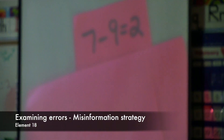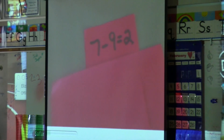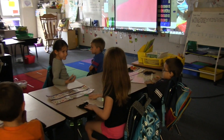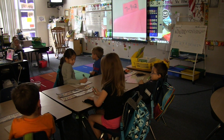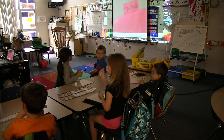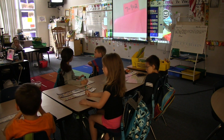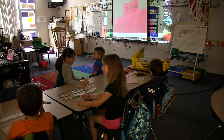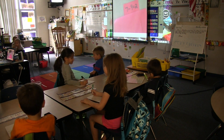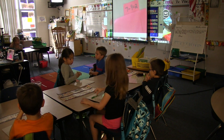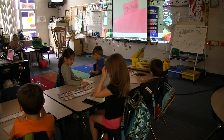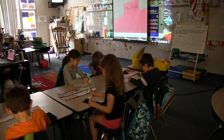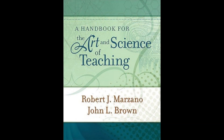Seven minus nine. A student says 'seven minus nine equals two, but nine's a bigger number.' The teacher reacts: 'Whoa — Sydney's confused.' Eyes on Sydney. Sydney explains: 'Nine's a bigger number than seven, so how can we take away nine and still have only seven?' The teacher says: 'Everyone, let's prove her right or wrong. Draw me a picture to show me that seven minus nine is or isn't two.'